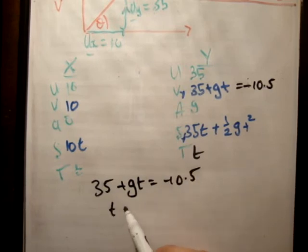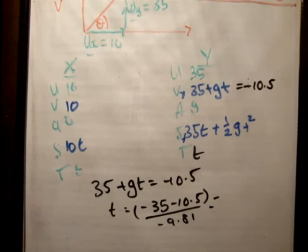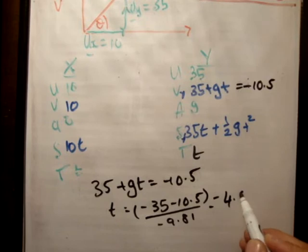So 35 plus gt is equal to minus 10.5. Therefore, t is equal to minus 35 minus 10.5 over minus 9.81. And that's equal to minus 10.5 seconds. That's equal to 4.58. So say 4.6 seconds.